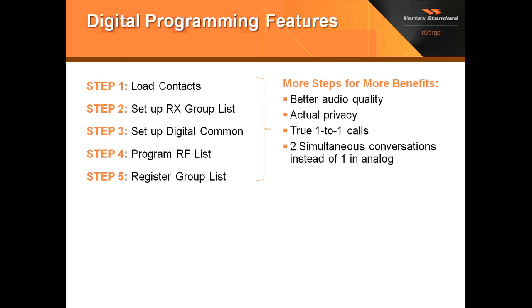Now we're going to talk about programming the radio in digital. First, we're going to load the contacts, then the receive group list, then the digital common. After that, we'll program the RF list, and then register the RF list to the group list. There are more steps involved, but you have more benefits from operating in digital: better audio quality, true privacy for one-to-one calls, and when operating through a repeater, you can have two simultaneous conversations. In analog mode, you have just one group talking at a time; in digital, you can literally have two different groups talking at the same time.